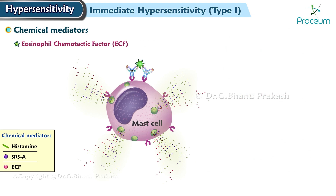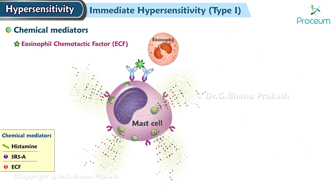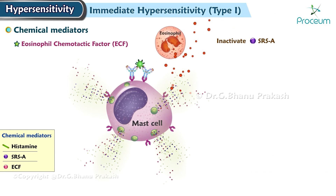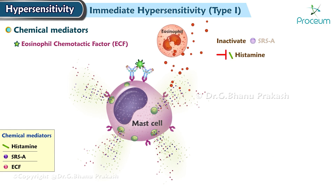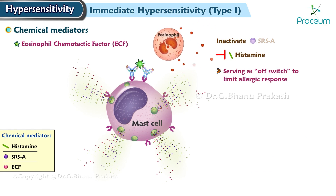Eosinophil chemotactic factor specifically attracts eosinophils to the area. Interestingly, eosinophils release enzymes that inactivate SRSA and may also inhibit histamine, perhaps serving as an off switch to limit the allergic response.